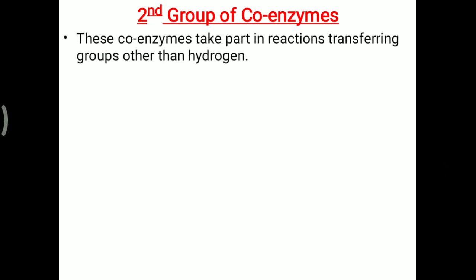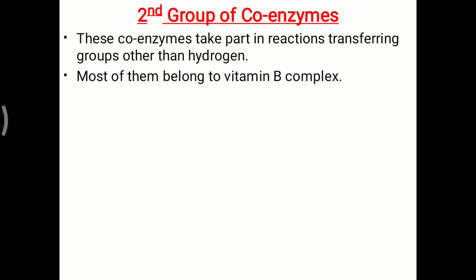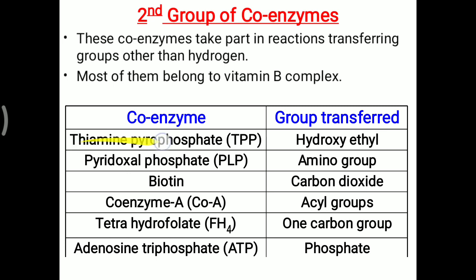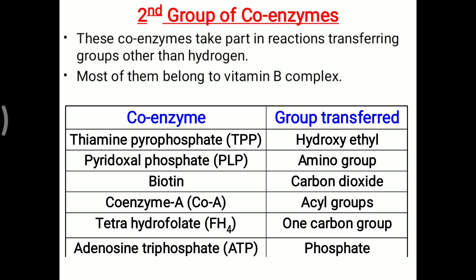The second group of coenzymes takes part in reactions transferring groups other than hydrogen, and most belong to the vitamin B complex. These include: thiamine pyrophosphate (vitamin B1) — hydroxyethyl group transfer; pyridoxal phosphate (vitamin B6) — amino group transfer, especially in protein metabolism; biotin — carbon dioxide transport; coenzyme A (vitamin B5) — acyl group transport in lipid metabolism; tetrahydrofolic acid — one-carbon group transfer (methyl, methylene, methenyl); and ATP — phosphate transport, donating phosphate to form ADP and releasing energy.